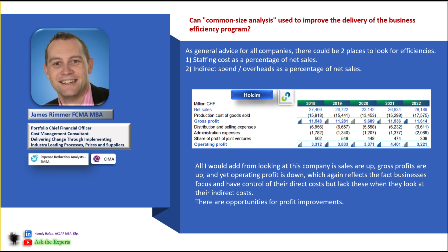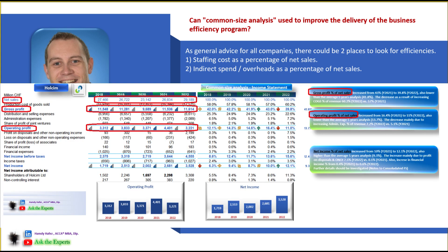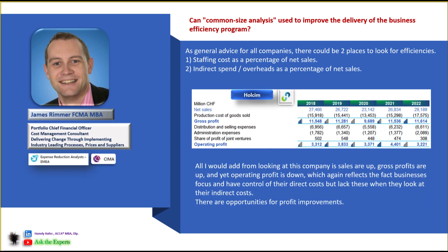The second piece of advice was after his reading of the Holson data analysis. He noted: all I would add from looking at this company is sales are up, gross profits are up, and yet operating profit is down, which reflects the fact that businesses focus on and control their direct costs, but lack that control when looking at their indirect costs.